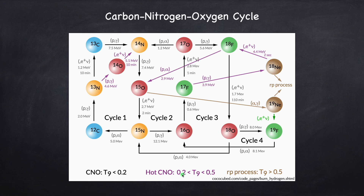When we say the hot CNO cycle takes over at a T9 of 0.2, what we mean is that above that temperature it will put out more energy than the cold CNO cycle, so it will be the dominant form of hydrogen fusion. In this diagram, there's also what's called the RP process in a goldish-brownish color. RP process stands for rapid proton process. Basically, if you get to a temperature sufficiently high — T9 of 0.5 — protons are moving so fast that the dominant form of energy production is protons being captured on a bunch of different nuclei. At a sufficiently high temperature you break out from the CNO cycle into the RP process, but we're not going to discuss the RP process in this video.